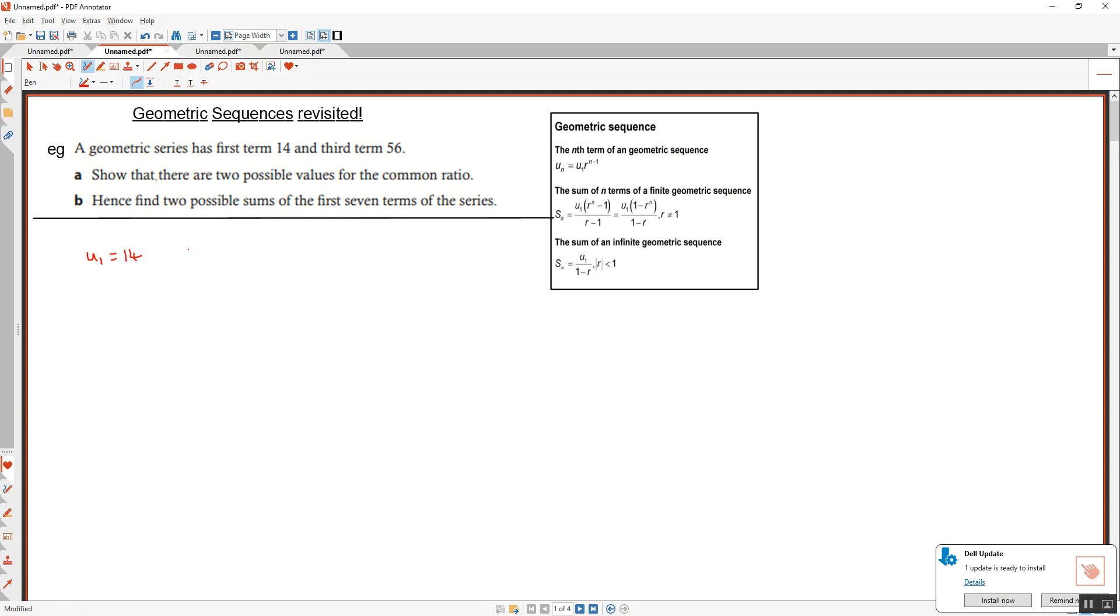Any ideas how we want to set this question up? First term is 14, third term is 56. What do you think is a good idea to write down first? What's the best way of writing first term? u1, right. So we're going to write u1 is equal to 14. Third term, how do we say that? u3 is 56.